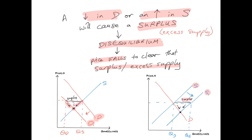The same is true when supply increases — it creates a surplus, which exerts downward pressure, so price gradually falls. The falling price gradually increases quantity demanded and decreases quantity supplied until a new equilibrium is reached. You can see that as price rises or falls, it gradually clears any shortages or surpluses that exist in the market, naturally bringing the market back to equilibrium. This is essentially what the price mechanism is.